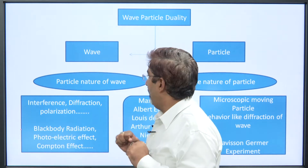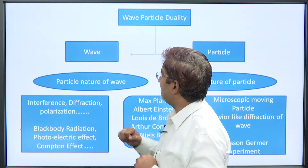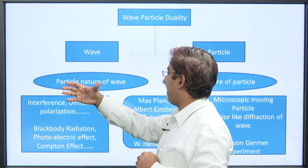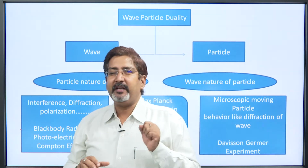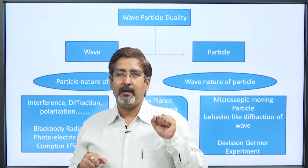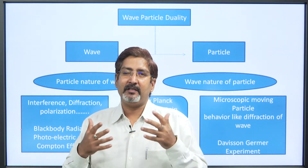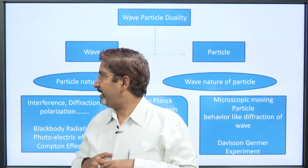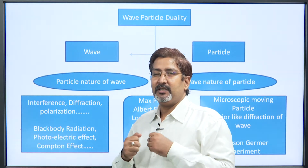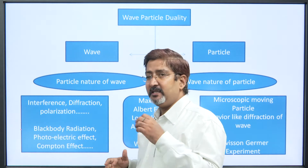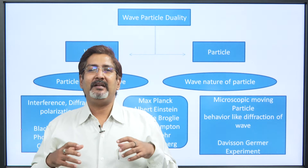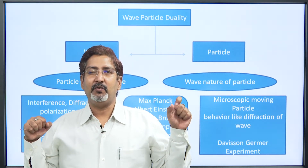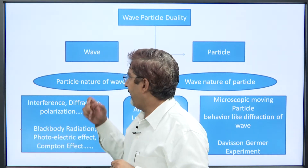One well-established concept to discuss first is the particle nature of wave. We can best understand this with the help of light. Light is wave or particle — there has always been a contradiction between scientists. In 1600, two scientists gave contradictory theories: one was Christiaan Huygens, and the other was Isaac Newton.